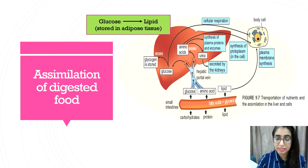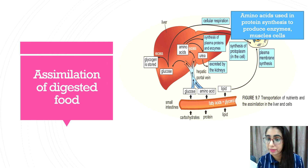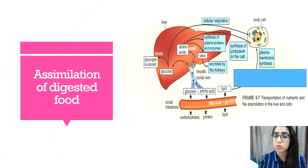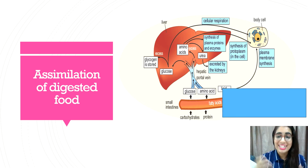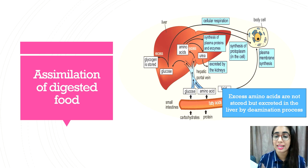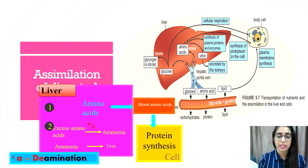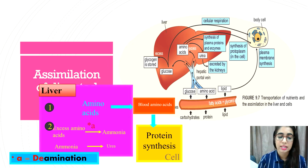For assimilation of amino acids, amino acids are used in protein synthesis to produce enzymes, muscle cells, and components of the cytoplasm and plasma membrane. They are used for growth and to restore cells. Excess amino acids are not stored but are excreted via deamination in the liver, as seen in the previous slide, because excess amino acids can be very toxic to the body. The deamination process produces carbohydrates, which are converted into glycogen by the liver, and also produces urea, which is excreted by the kidneys.